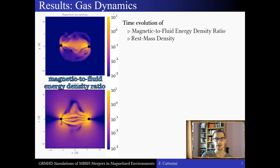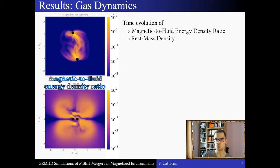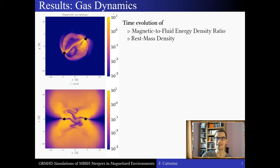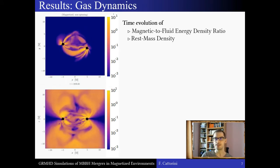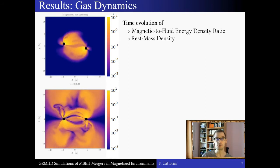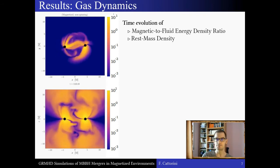As you can see, in just a few orbits, the gas surrounding the binary becomes highly magnetized, leading to the formation of two magnetically dominated regions on the normal plane.